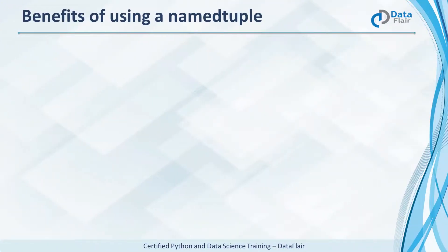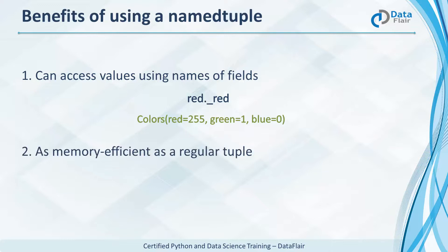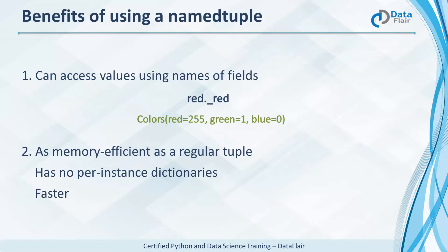A named tuple offers the following benefits. It lets us access values using field names instead of indices — think of it as self-documentation. It is easier to maintain code this way. Also, a named tuple is as memory efficient as a regular tuple since it has no per-instance dictionaries. This means it is lightweight and takes up only about as much memory as two tuples, which also makes it faster than dictionaries.